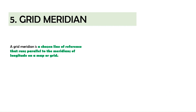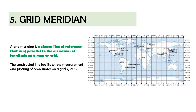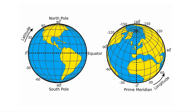In a grid-based coordinate system, a grid meridian is a chosen line of reference that runs parallel to the meridians of longitude on a map or grid. It is a constructed line that facilitates the measurement and plotting of coordinates on a grid system, often represented as vertical lines on a map intersecting with horizontal lines — parallels — to form a grid. Grid meridians are based on a specific projection or coordinate system. Unlike true meridians, which converge towards the poles, grid meridians are typically straight and parallel, allowing for easy measurement and navigation.